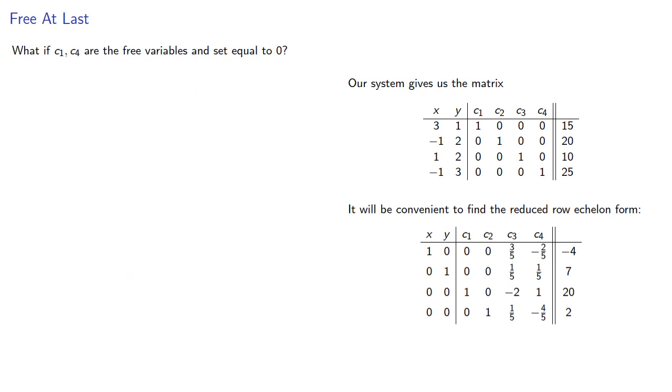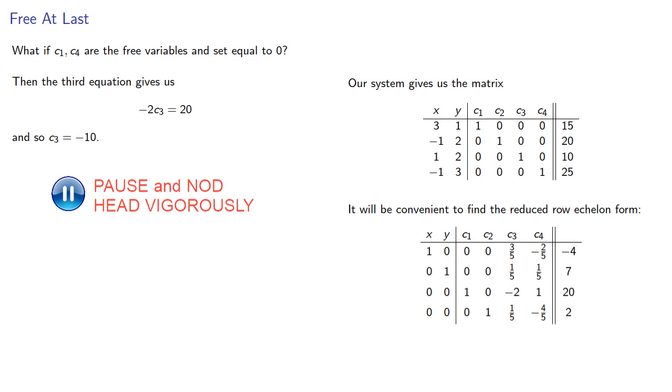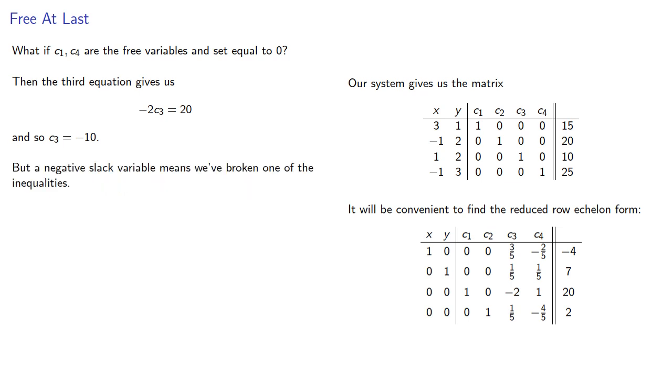What if c1 and c4 are the free variables, and set equal to zero? Then the third equation gives us, and so c3 is negative 10, but another negative slack variable means we've broken one of the inequalities.